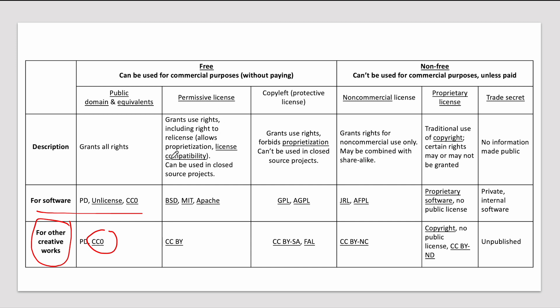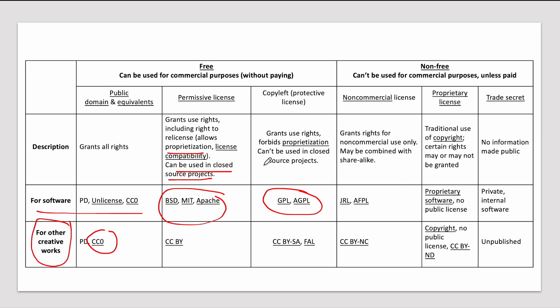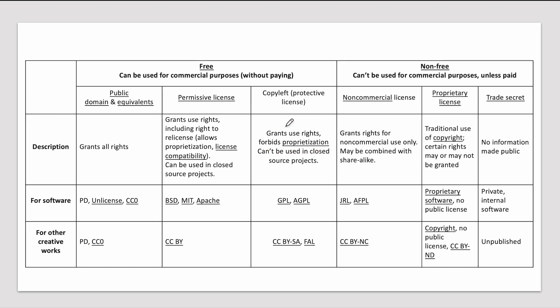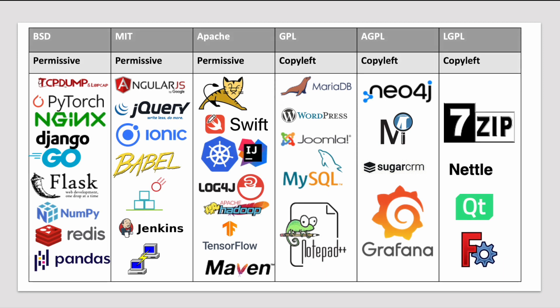Permissive licenses allow you to have proprietorship, meaning you can use them in closed source projects. Closed source is like your own proprietary code, while open source is code whose source code is available for everybody to see and utilize. GPL licenses are like copyleft — they cannot be used in closed source projects, they have to be open source, and they forbid proprietorship.